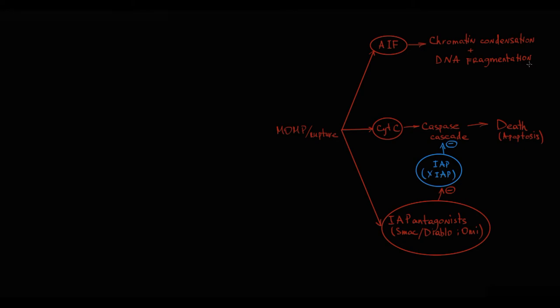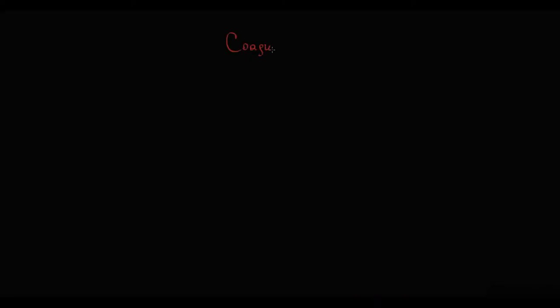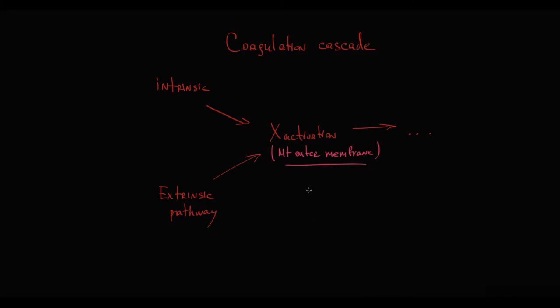We have discussed the final stage of the apoptotic intrinsic pathway. The reason we started this way is that mitochondrial outer membrane permeabilization, with all subsequent events leading to cell death, is the common pathway no matter which factor triggered apoptosis. The analogy is the coagulation cascade, where activation of factor 10 with all subsequent events is the same for both intrinsic and extrinsic pathways. So all roads lead to alterations in mitochondrial outer membrane state.